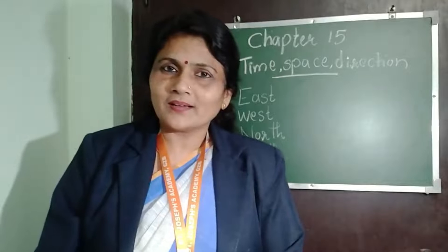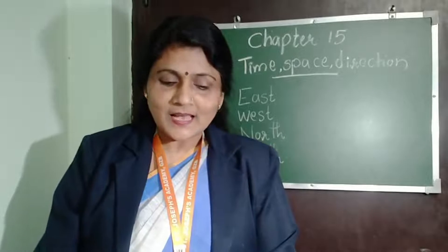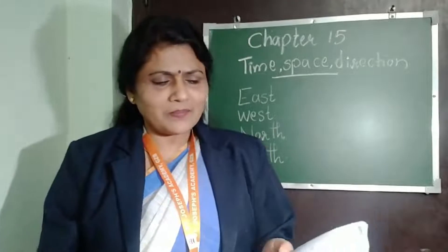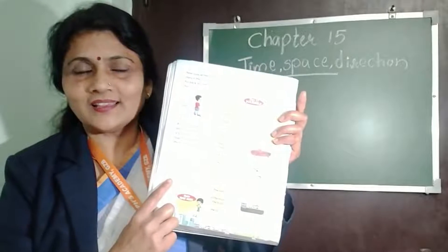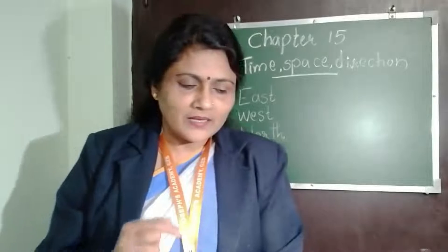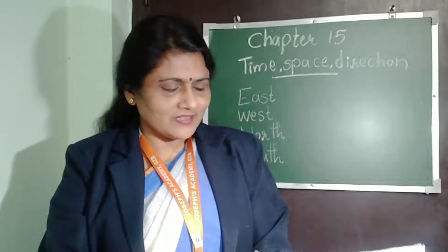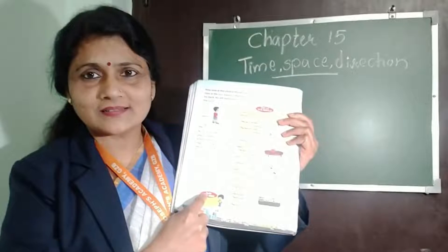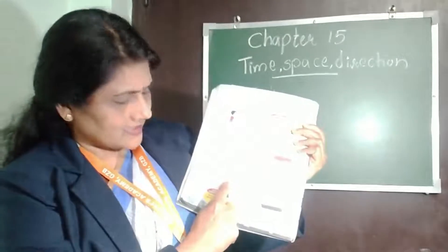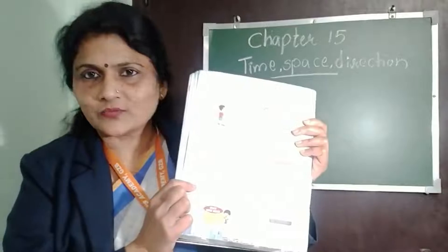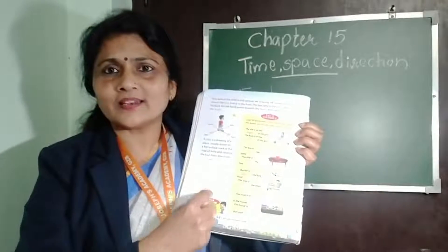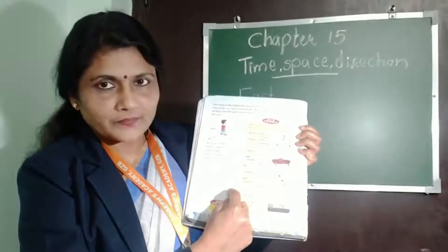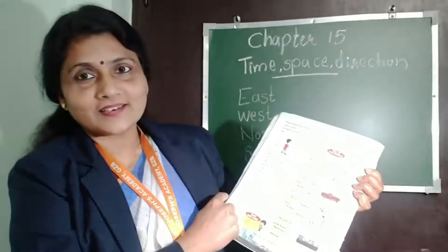What is a map? A map is a drawing of a place, usually drawn on a flat surface. Look at the map of India. Please observe the four main directions on it. The top of the map is North and the bottom part is South. The right side is East and the left side is West. These are the main directions of our country.